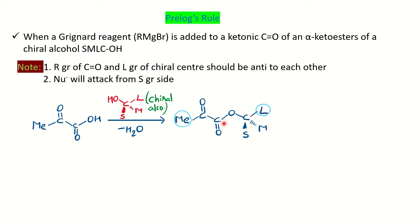Now we have to see that the large group L of the chiral alcohol should be anti to the alkyl group of the keto group. Here, Me is anti to L — we must maintain this first condition. If it is not, we do a rotation to bring it to the anti position. The two groups OH and L are in plane, the medium group is below the plane, and S (the small group) is above the plane. The same stereochemistry is reflected in the product: ester oxygen and L are in the same plane, medium group below, and S above.